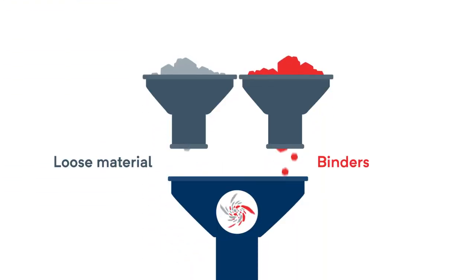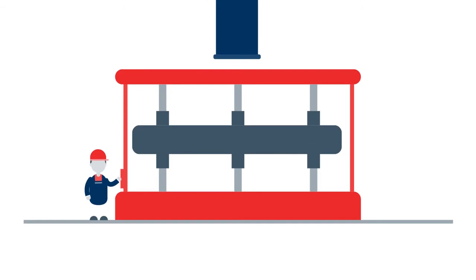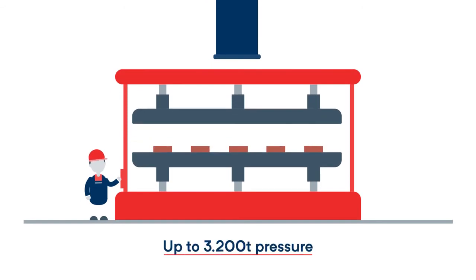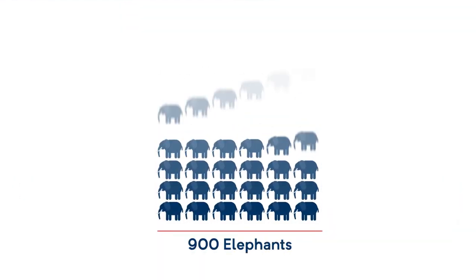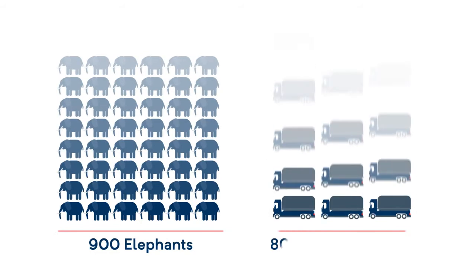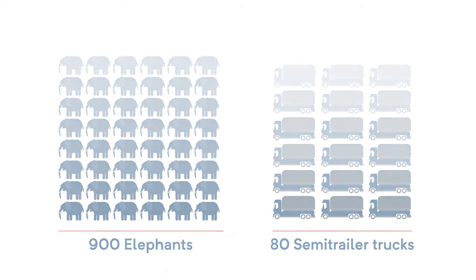The yet loose material is then mixed with binders and pressed into various shapes and sizes with up to 3,200 metric tons of pressure. This pressing power corresponds to the weight of roughly 900 elephants or 80 loaded semi-trailer trucks.